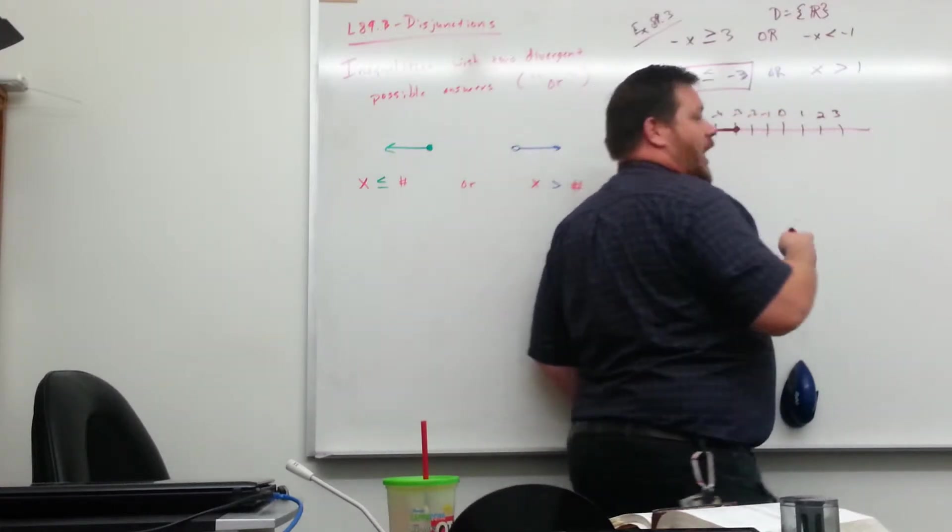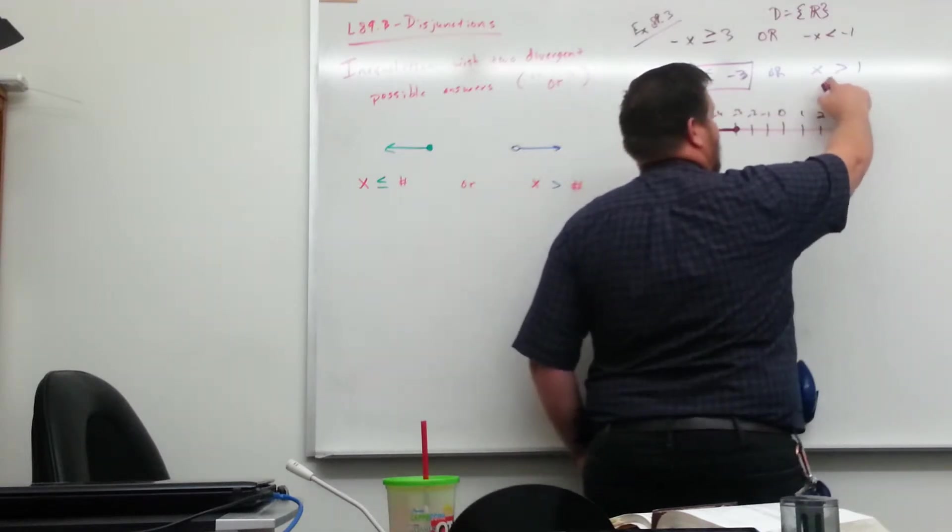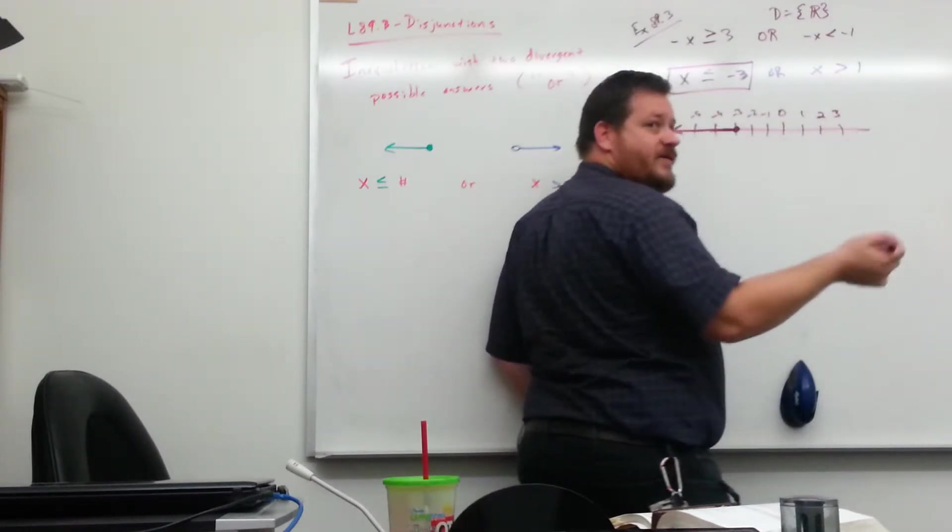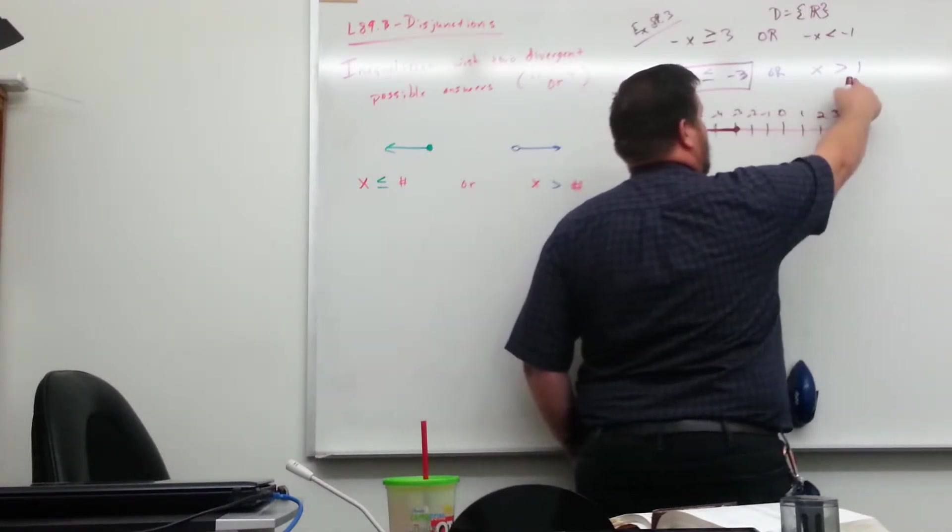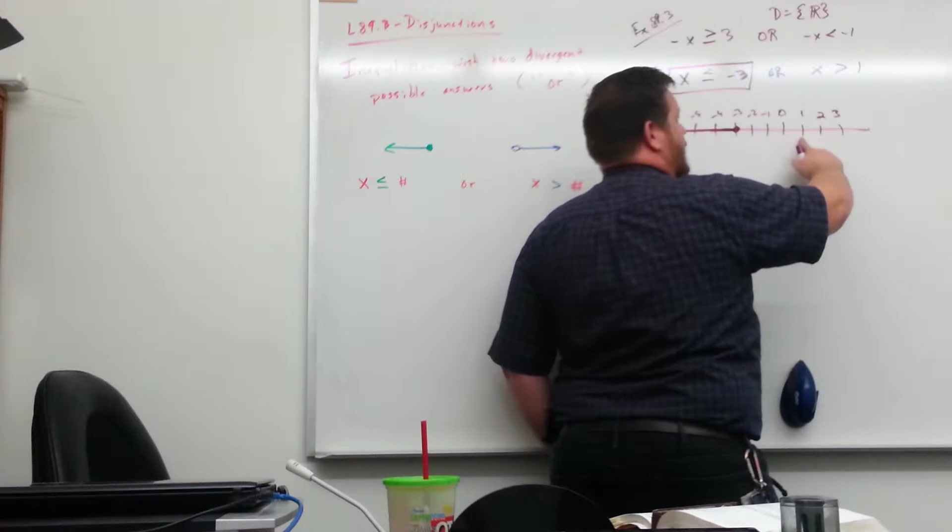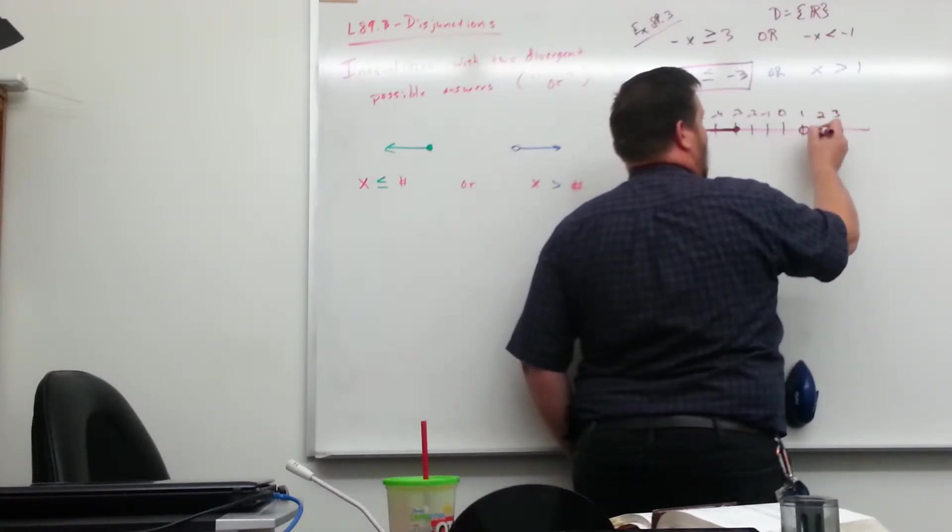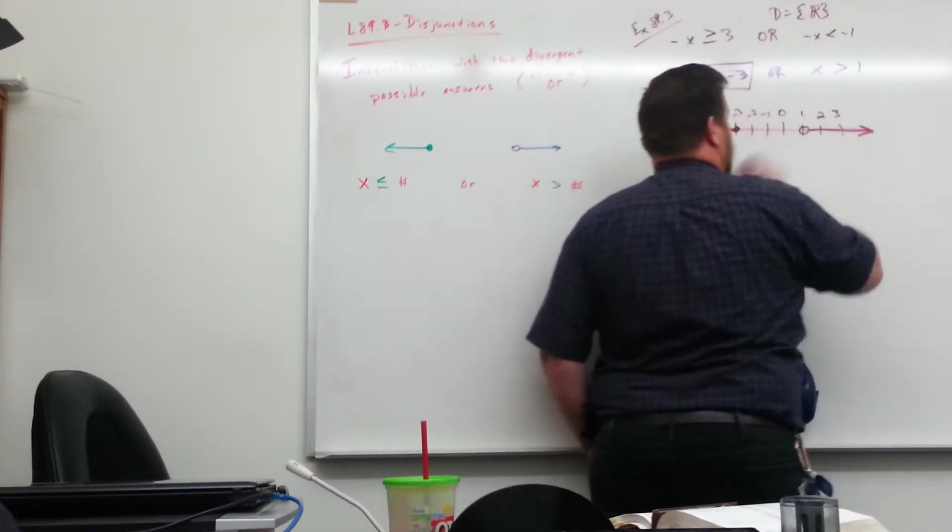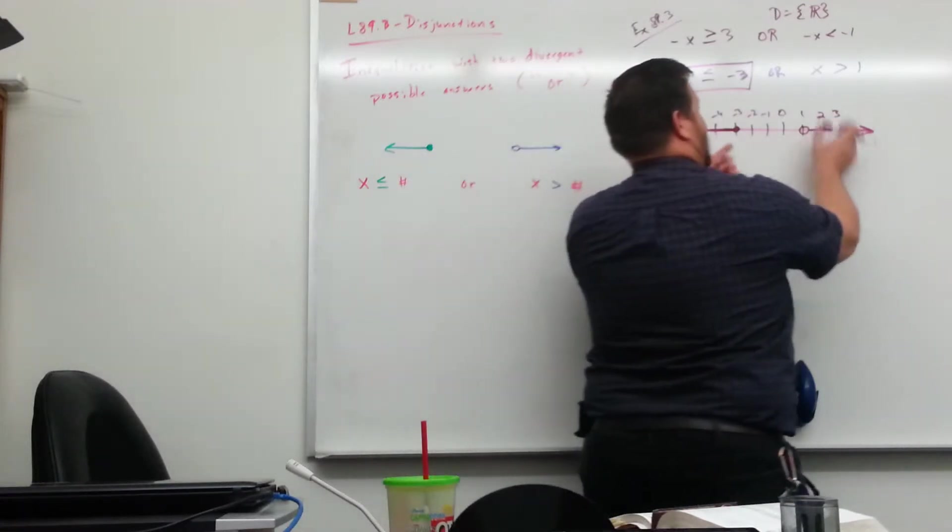But then the other possibility, the or part of it, is that x being greater than 1, those are also things that we want to be graphing. And so I come over here to 1. Can x be 1? No. When we're talking about reals, I need an open dot here, and everything greater than, so everything to the right of there. So here's my graph for this example. And so you do have to have both pieces.